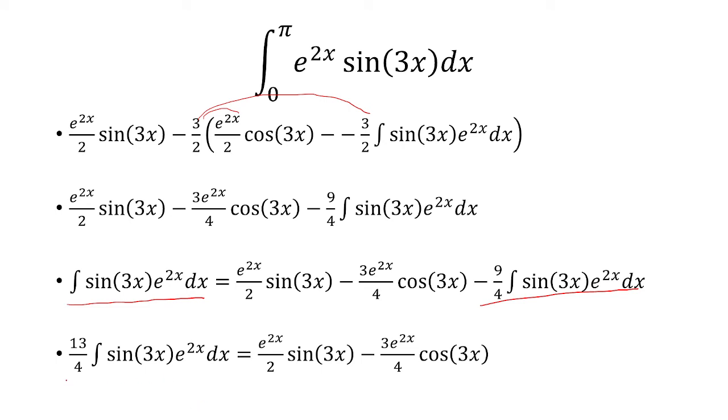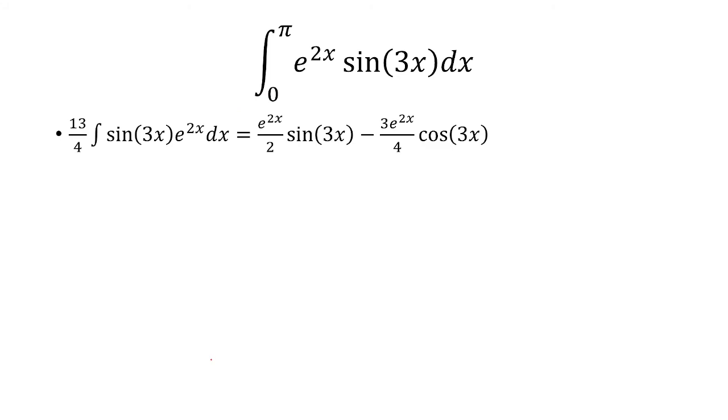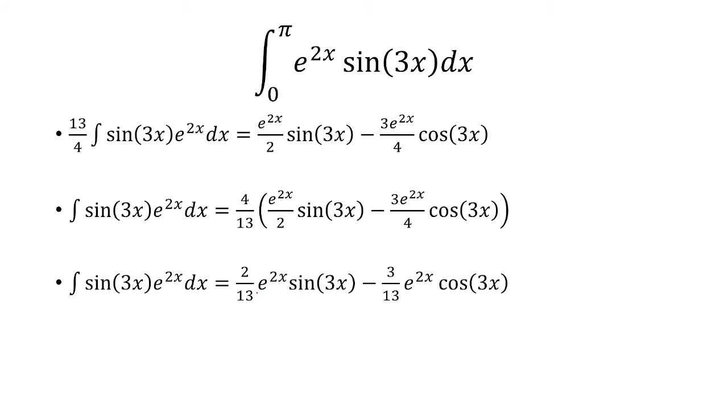And that's going to give us 13 over 4 times the integral. I want to solve for just the integral, so I'm going to multiply both sides by 4 over 13. And then I'm going to distribute the 4 over 13 to get this.